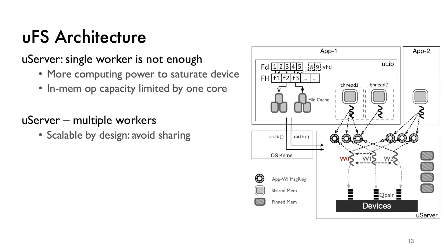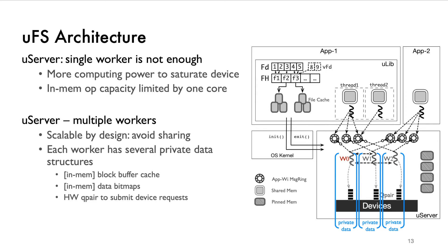We also have data pages that are shared for the data transfer between the ULIB and the USERVER. With increasing demand from applications, the file system needs more cores, such that USERVER is a multi-threaded file system service. Note that once active, each worker will occupy the entire core.